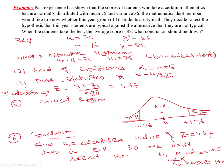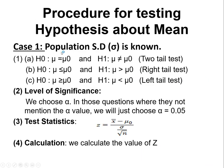When the 16 students took the test, the average score was 82, so x-bar equals 82. This is Case 1 because population standard deviation is known — the variance is given as 36, and taking the square root gives sigma equals 6. The null hypothesis is mu equals 75 and the alternative is mu not equal to 75.